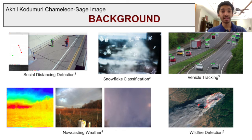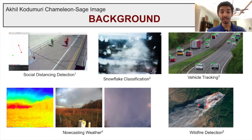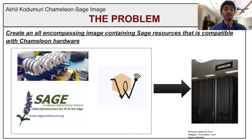However, in order for this goal to become a reality, software and hardware must be created to support these machine learning algorithms at the edge. There must be a way for a student or programmer to easily access Sage's resources and interact with the Sage environment to run their machine learning algorithms. Because of this problem, the Sage team created an all-encompassing image designed to meet the needs of students and programmers who use the Sage platform.